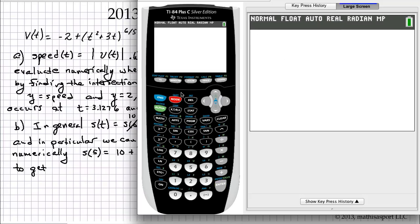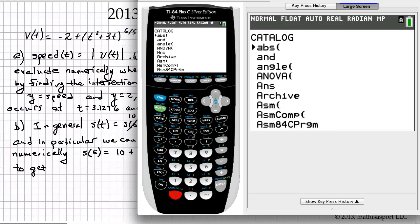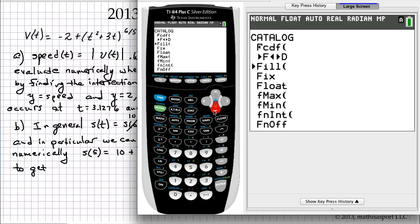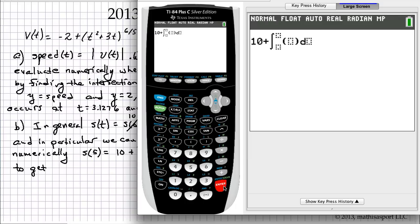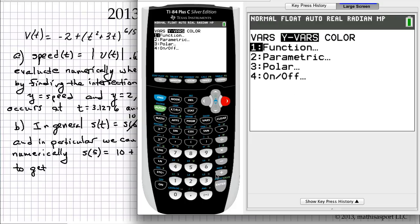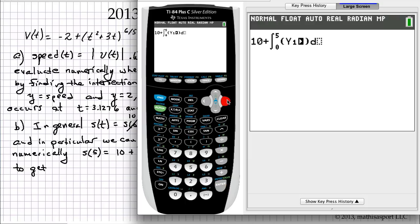Remember Y1 is V of T. And so what we want is 10 plus FnInt from the catalog. We jump to F and scroll down to FnInt. We're going from 0, our start point, up to 5. Our function is Y1, and we wrote it in terms of X, so we'll say our variable is X. And what do we get? Negative 9.4073.